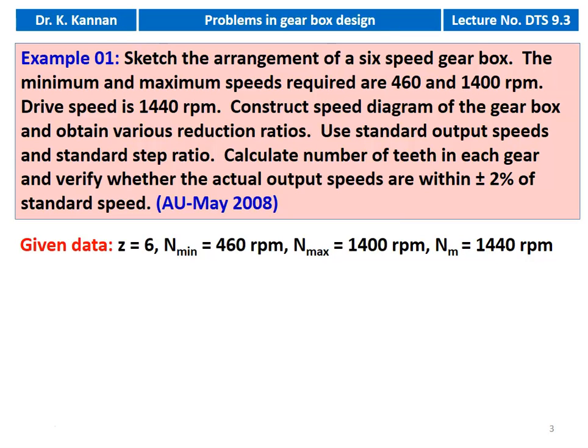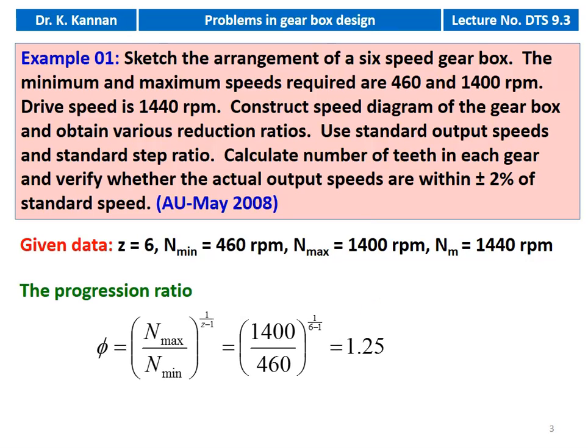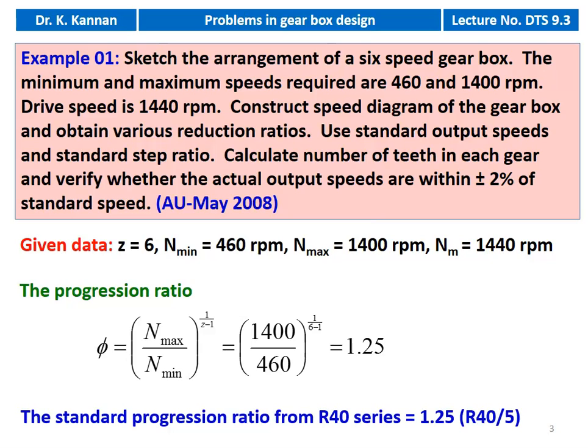Write down the given data: number of steps Z equals 6, minimum speed 460 RPM, maximum speed 1400 RPM, and motor speed is 1440 RPM. First step: calculate the progression ratio. The formula is φ equals N-max divided by N-min to the power of 1 divided by (Z minus 1). Substituting: 1400 divided by 460 to the power of 1/5 equals 1.25. We then take the standard progression ratio from the R40 series, where 1.25 is available — it is R40 by 5.